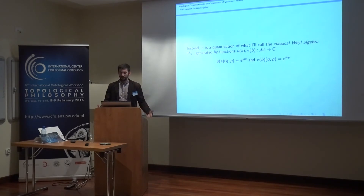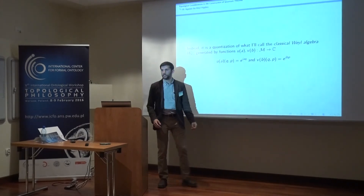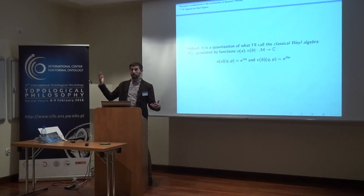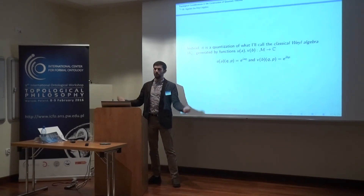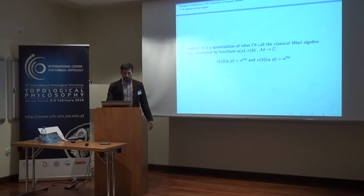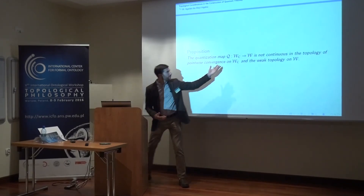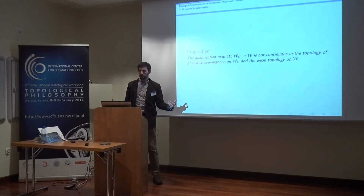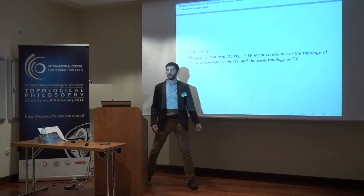To get to the Weyl algebra, you have to start with what I'll call the classical Weyl algebra. To get this, we start with functions of the form exponentials of position and momentum in the classical case — exactly analogous to what you do in the quantum case to get the quantum Weyl algebra. These are the functions we quantize to get the operators U and V. But one can show that this quantization map from the classical Weyl algebra to the quantum Weyl algebra is not continuous in the relevant topologies — that is, the topology of pointwise convergence on our classical functions and the weak topology on the quantum Weyl algebra.